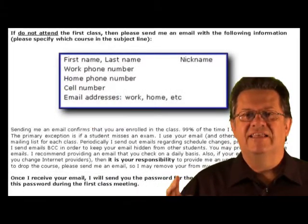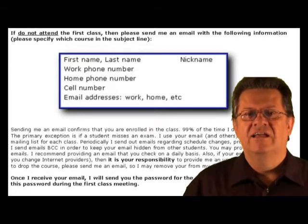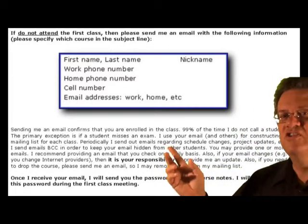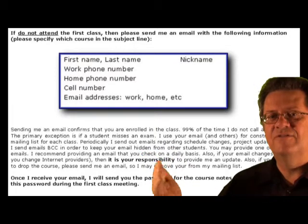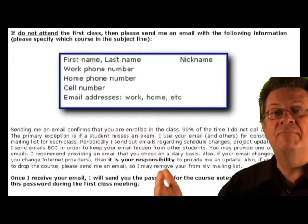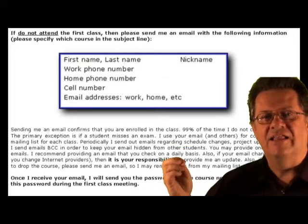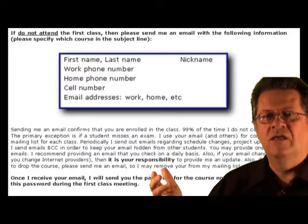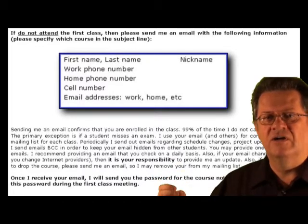If you take a look at the second page of the online orientation, you'll see a box there. I want you to fill out your last name, first name, phone number, and email addresses. If you have multiple email addresses — say work and home — please send them to me, plus your home number, cell number, and work number.